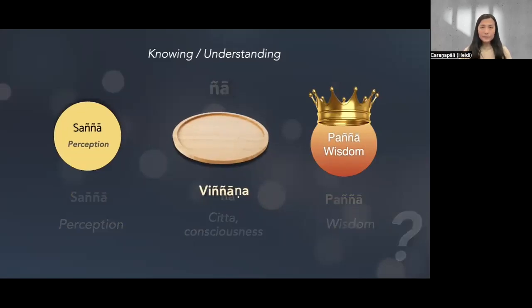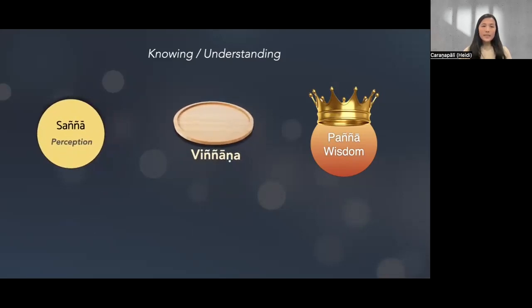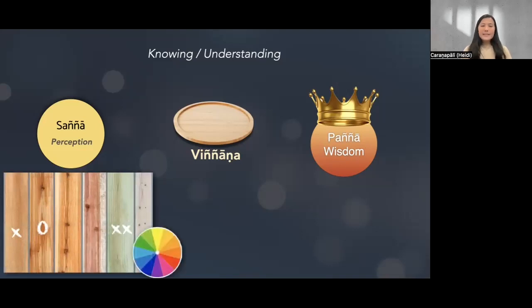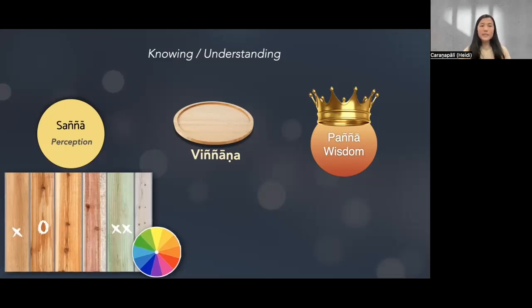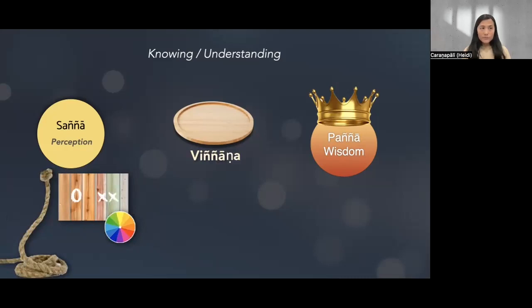Saññā is the knowing of the object — it means just the perception of the object. When we studied the four functions, saññā makes marks: when it sees the object it notes the color, the shape. So saññā's knowing is by making marks. But there is one thing about saññā: it may be right or it may be wrong. For example, saññā sees something and knows it as a snake, but actually it's a rope. So wrong saññā is also possible.